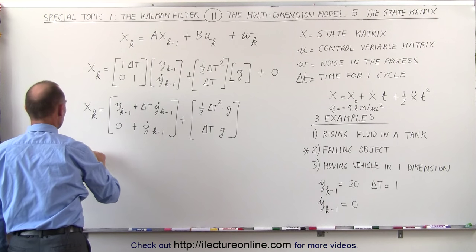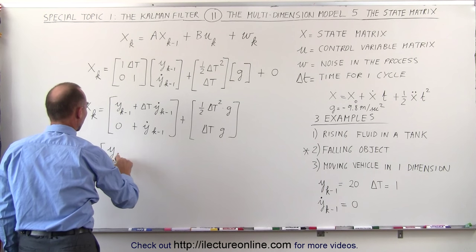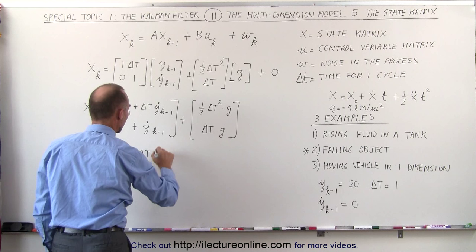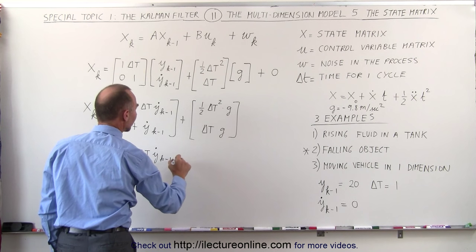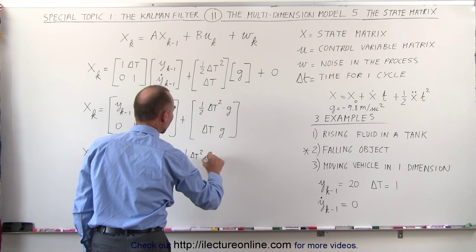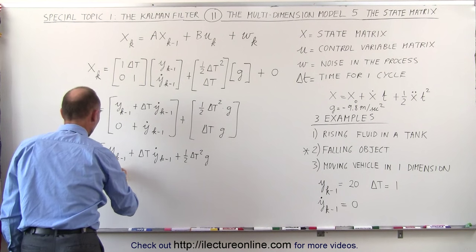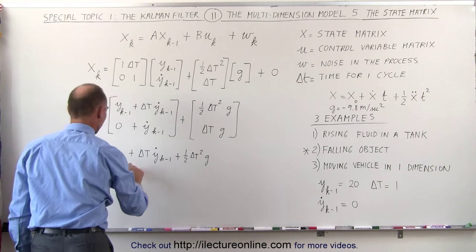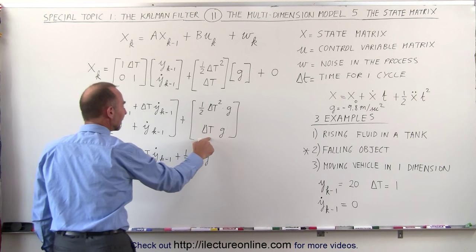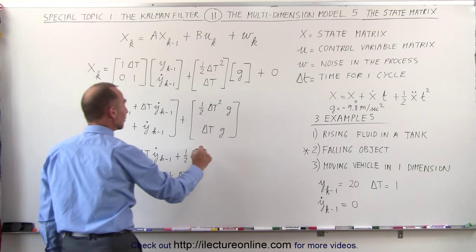Adding these together, now we have the new state matrix equal to the previous position in the y direction, plus delta T times the velocity in the y direction from the previous state, plus one-half times delta T squared times g. So position is also affected by the acceleration. For velocity, we take the initial velocity zero plus the velocity at the previous moment, and add to that the change in velocity due to acceleration: plus delta T times g. Remember that g is negative 9.8.